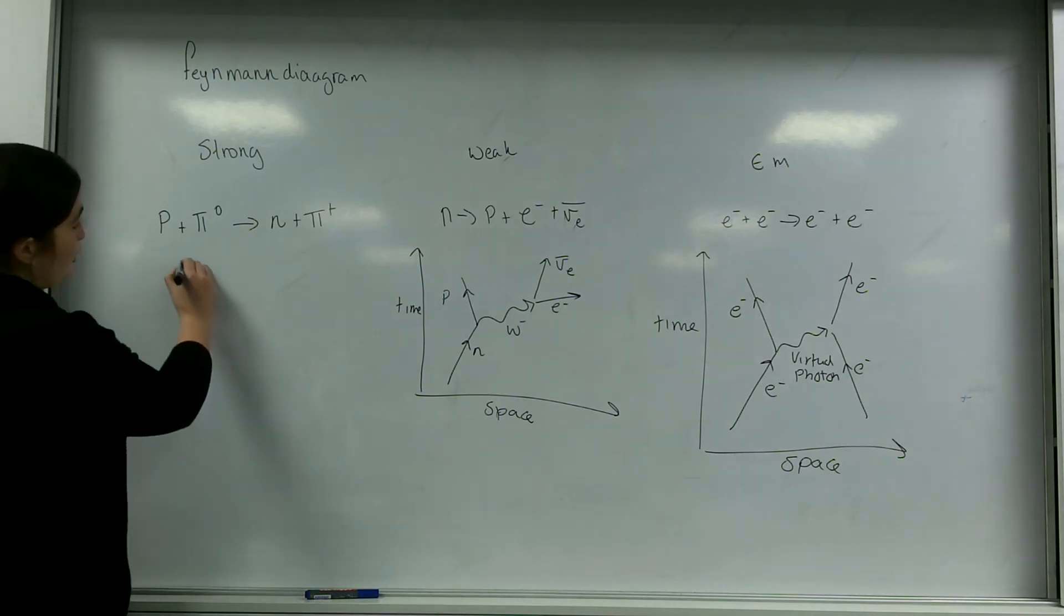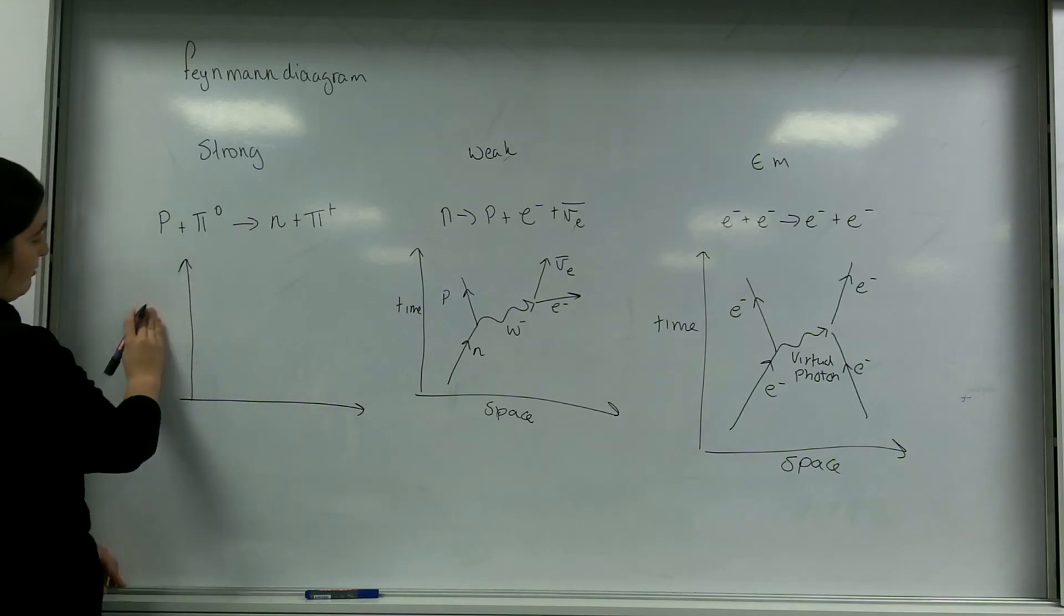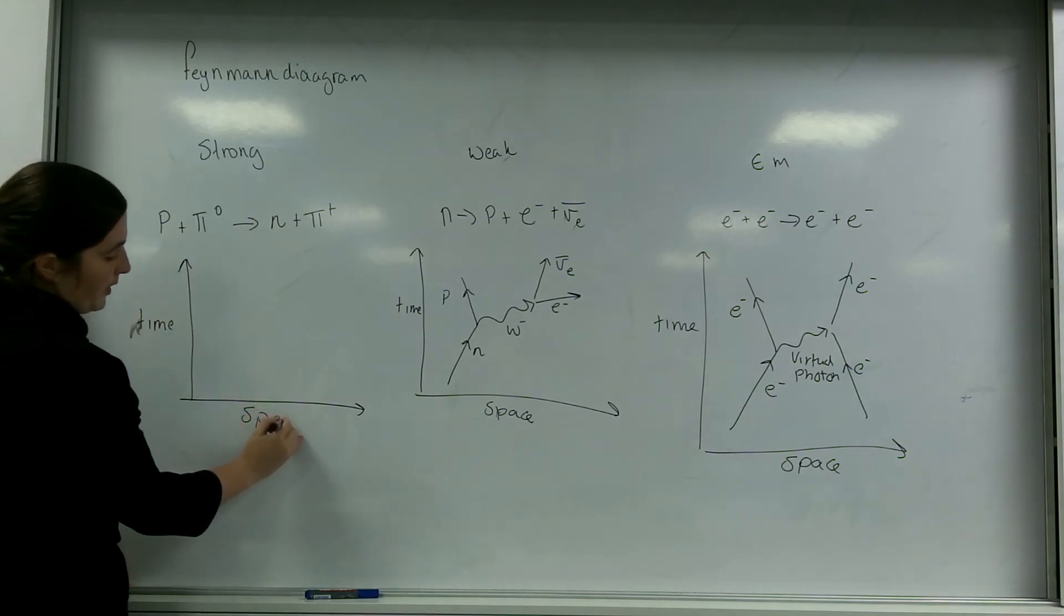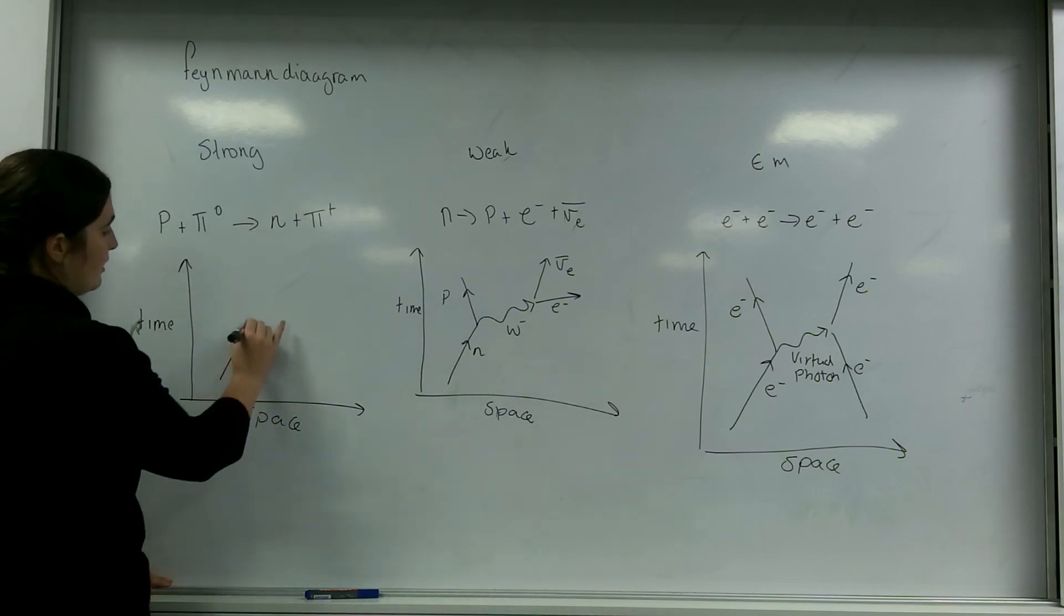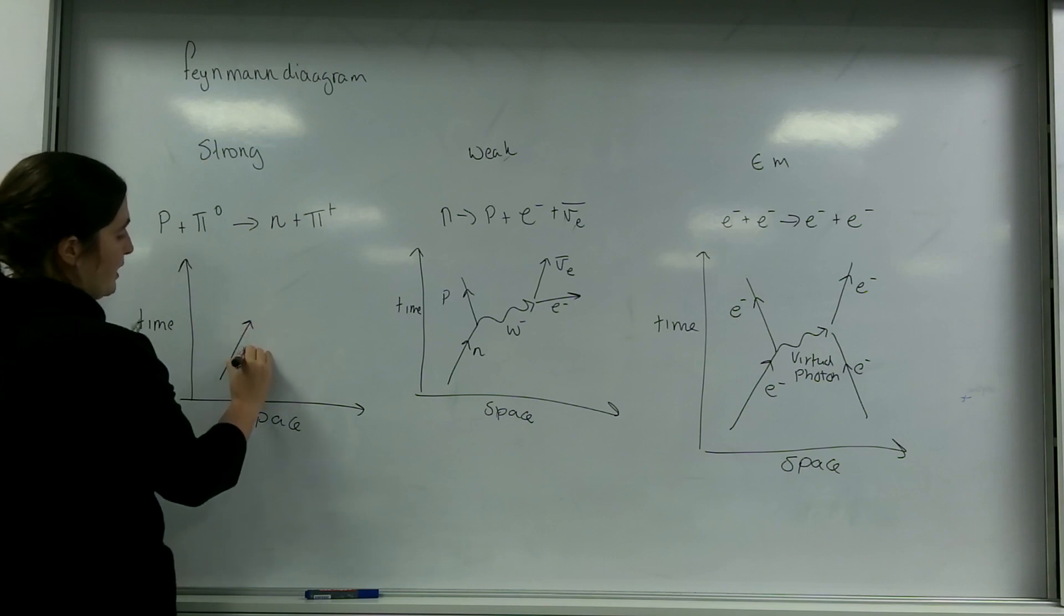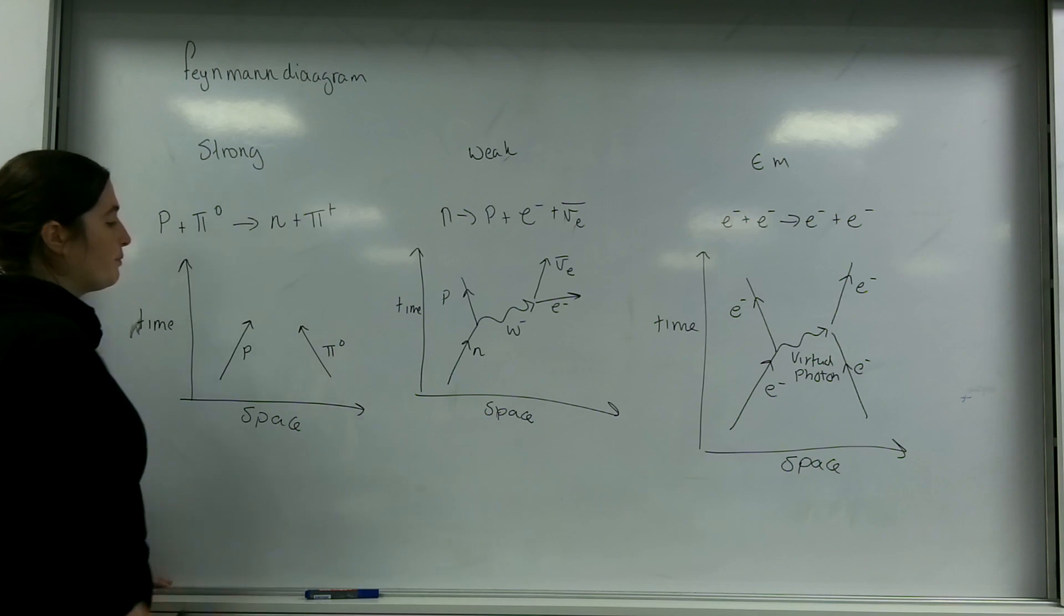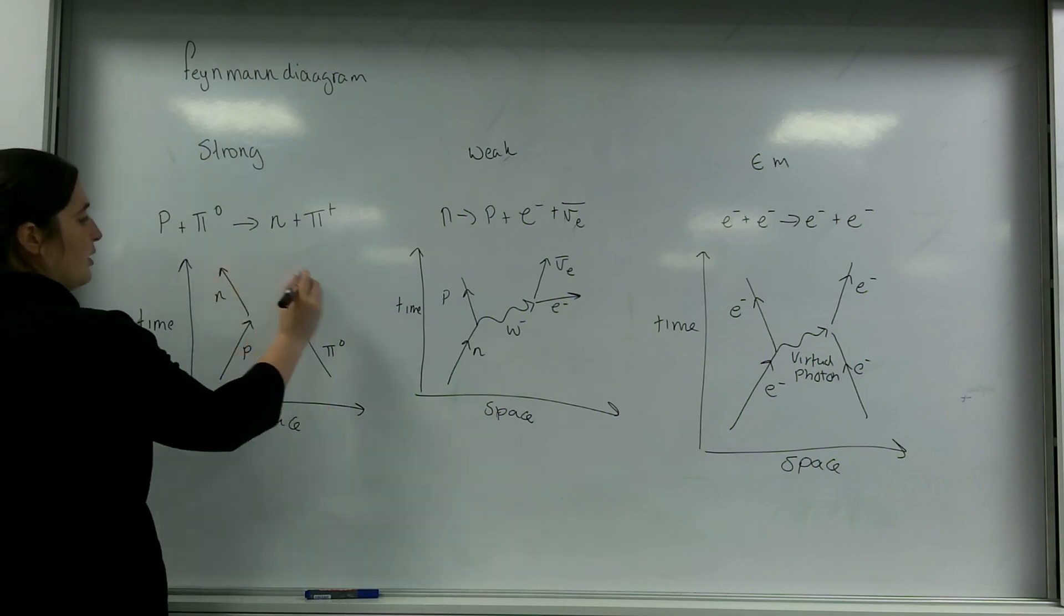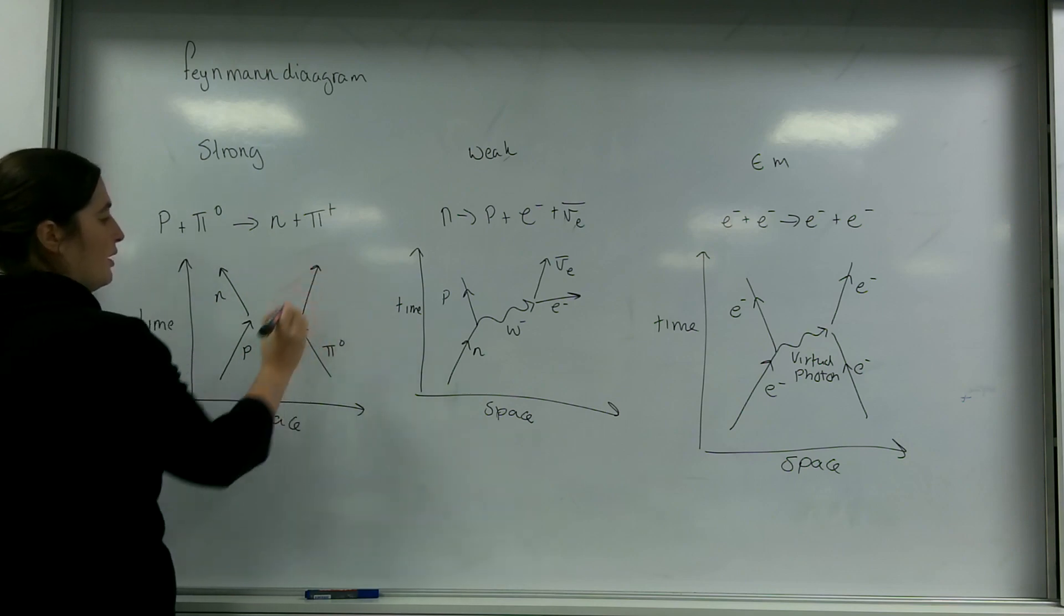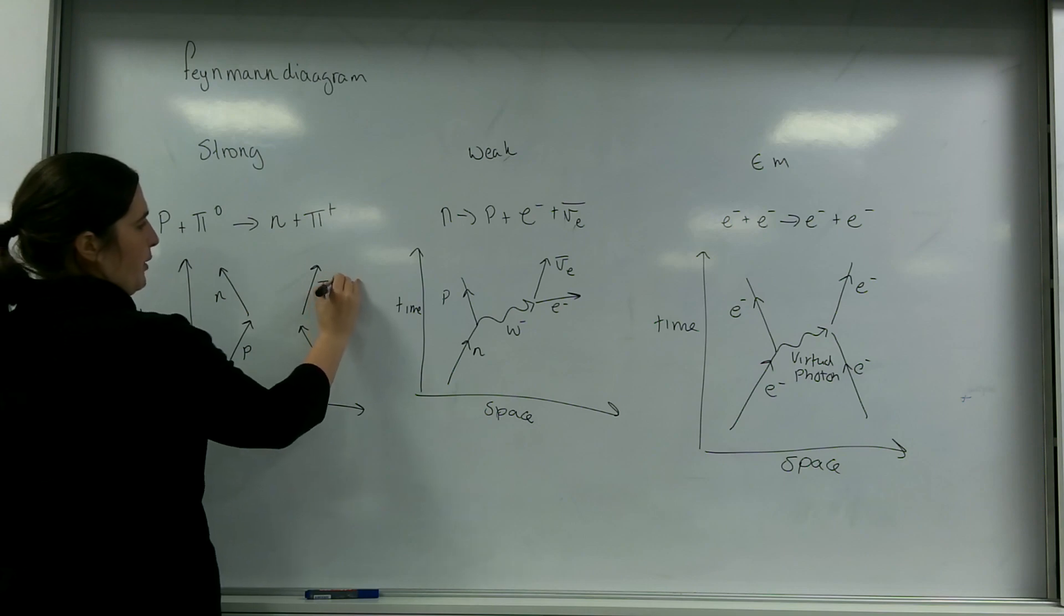Lastly, looking at the strong interaction. This here is time and this is space. I've got a proton and a pion interacting. A proton comes in and a pion naught comes in, and my proton changes into a neutron and my pion turns into a pion plus.